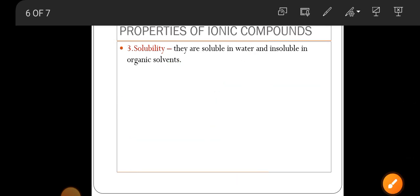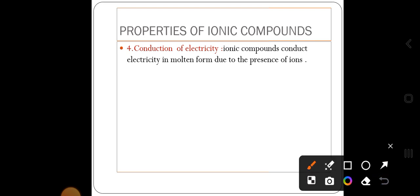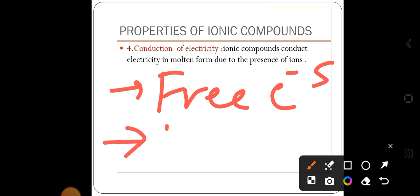The fourth property - conduction of electricity. Conduction of electricity happens only because of two conditions - one is free electrons. When you talk about free electrons, it means there is a lot of mobility. For example, in an electrical wire, there's a lot of mobility with respect to the electron movement.